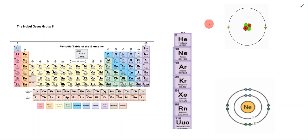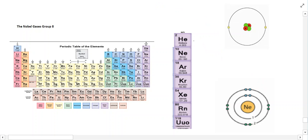They're known as inert gases or noble gases. We're going to look at two examples: helium, which is element two on the periodic table, and neon, which is element ten. We can see the Bohr structure of each — this one is helium and this one is neon.